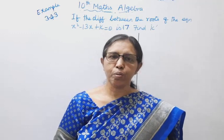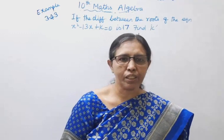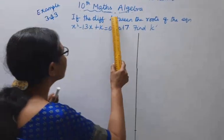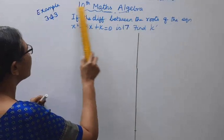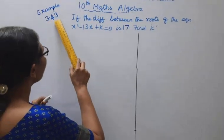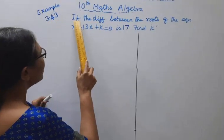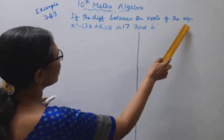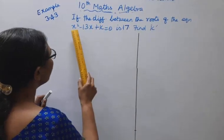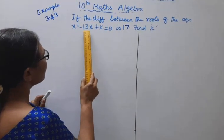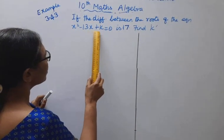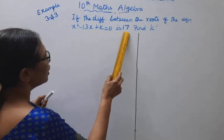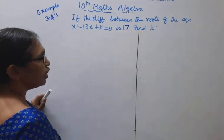Hello students, welcome to Max and Tamil channel. 10th standard Math algebra example 3.43: If the difference between the roots of the equation x squared minus 13x plus k equal to 0 is 17, find k.